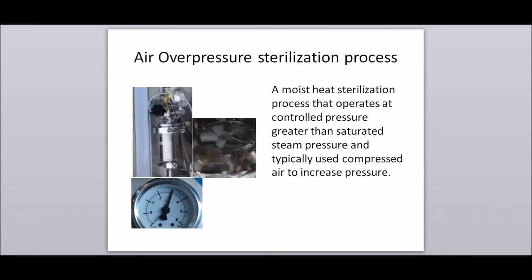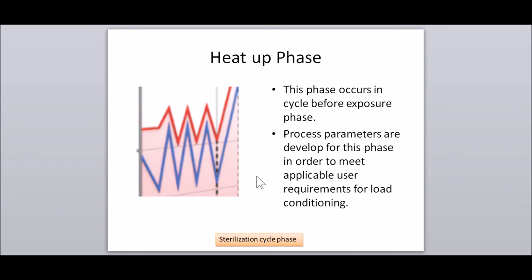Air over pressure sterilization process: a moist heat sterilization process that operates at a controlled pressure greater than saturated steam pressure, and typically uses compressed air to increase pressure. Heat up phase: this phase occurs in a cycle before the exposure phase. The process parameters are developed for this phase to meet applicable user requirements for load conditioning, such as air removal and preheating.